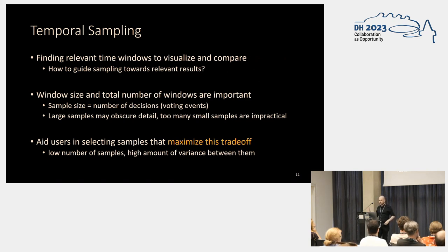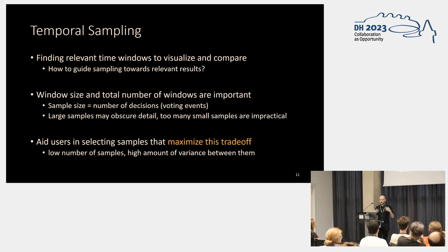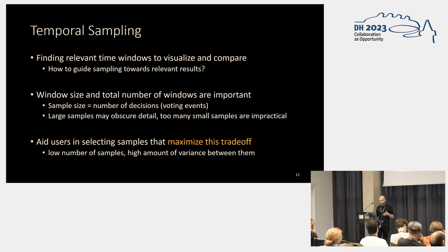Once we figure out the available data, the next step is identifying possible moments in time to divide and observe it. Our idea is to guide sampling toward relevant results containing the most information possible. Not only where in the timeline to pick observations is important, but also the size and number of windows. If we take too large a sample, we may obscure smaller variations within it. If we take too many small samples, it may become impractical. Our goal was to aid users in selecting samples that maximize this tradeoff — a low number of samples but a high amount of variance between them.